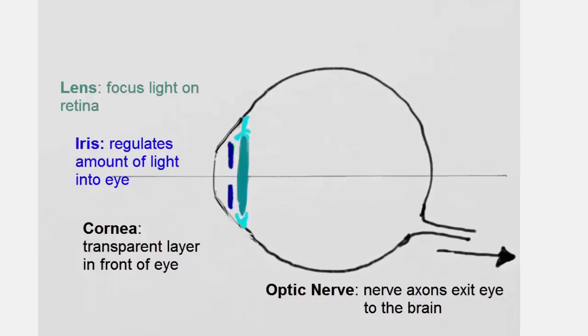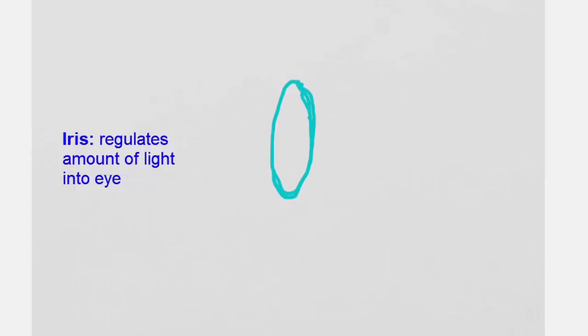The iris helps to regulate how much light enters the eye. Let's take a look at the arrangement of the iris, pupil, and lens.